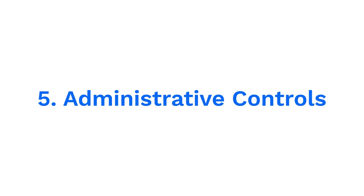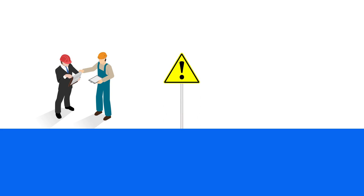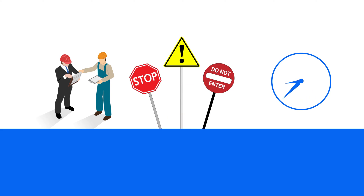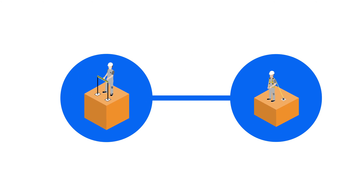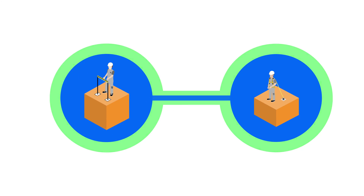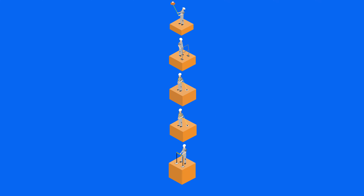The least effective option on the hierarchy is administrative controls. These are workplace policies and training procedures that reduce the likelihood of falls — examples include regular safety training, warning signs, and work schedules that minimize exposure to fall hazards. While these are important, they rely heavily on workers complying with rules. Administrative controls work best when paired alongside other fall protection methods and are typically the last resort when putting a safety plan together.